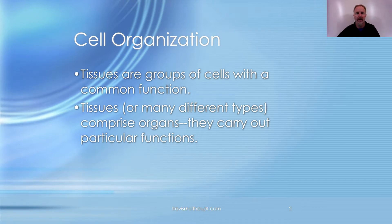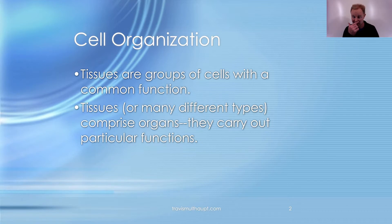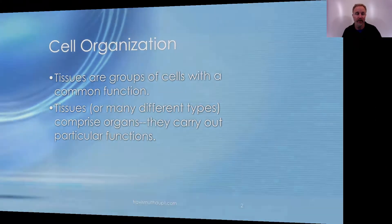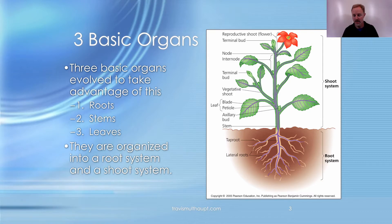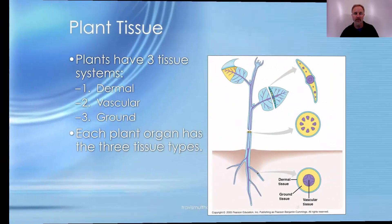Cells are the fundamental units of all living things, and tissues are groups of cells with a common function. There are many different types of tissues, whether in a plant or an animal. These make up organs that carry out particular functions. There are three basic organs in plants: roots, stems, and leaves, organized into a root system and a shoot system. Anything above soil level is the shoot system; anything below is the root system.